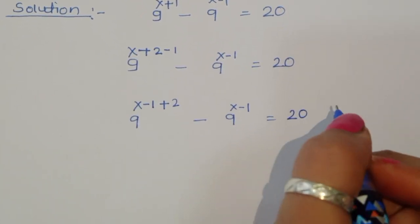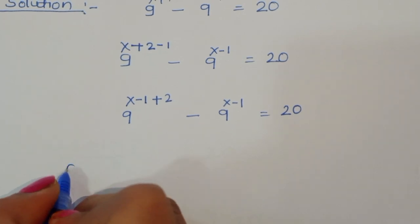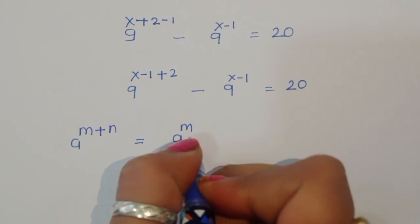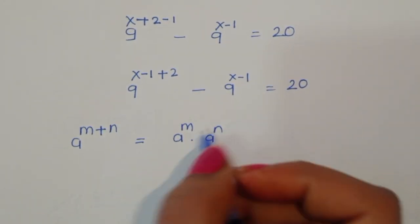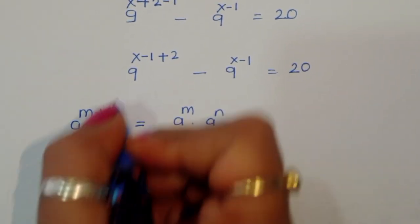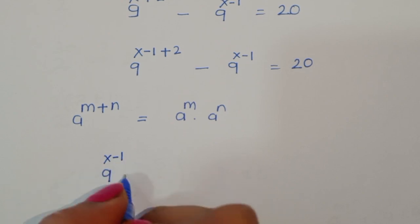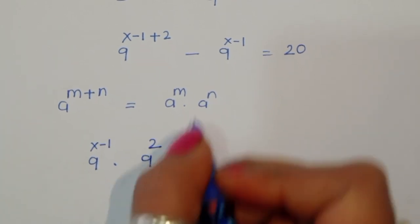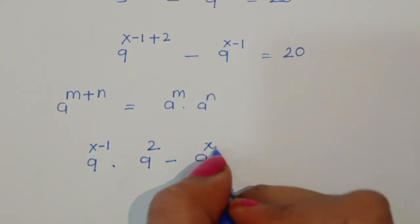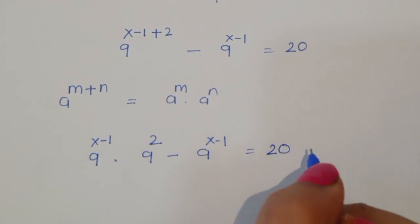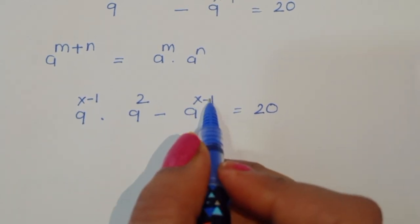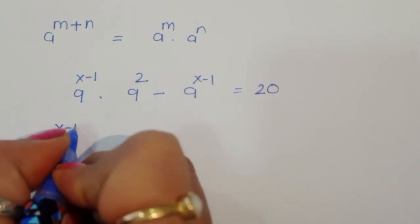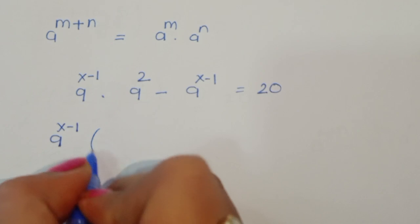We know the formula: a power (m+n) is equal to a power m times a power n. Using this formula, we get 9 power (x-1) times 9 power 2, minus 9 power (x-1) is equal to 20. Now we can take 9 power (x-1) as common.